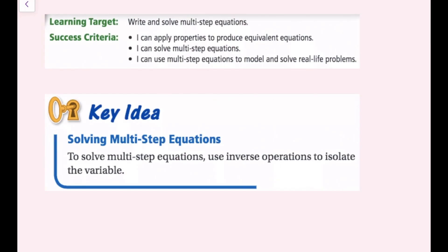The key idea is to solve multi-step equations using inverse operations to isolate the variable. We're going to use the reverse order of PEMDAS, with a couple of twists: there will be like terms to combine, and groups with parentheses to simplify using the distributive property. The order is: simplify by distributing and combining like terms first, then cancel out addition or subtraction, then cancel out multiplication or division.